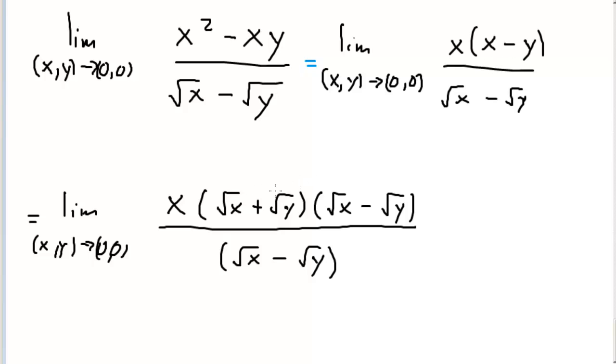You can double-check: square root x times square root x is x. Then we've got plus square root x times square root y minus square root x times square root y, which cancels. Then square root y times negative square root y gives us negative y. So we get x minus y. It's all there. Obviously, the square root x minus square root y in the numerator and denominator cancel.